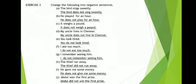Now Exercise 3: Change the following into negative sentences. Here also we have to use 'do' and 'does' and add 'not' to make negative sentences. The bird sings sweetly. Here we remove the 'S' from 'sings.' The bird does not sing sweetly.